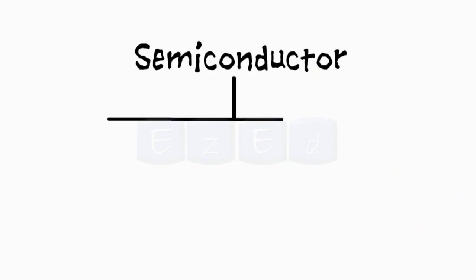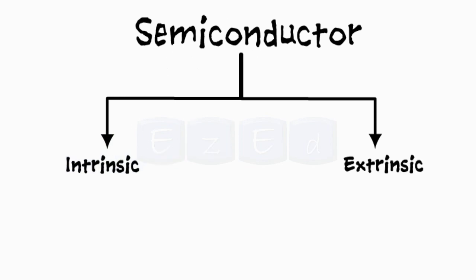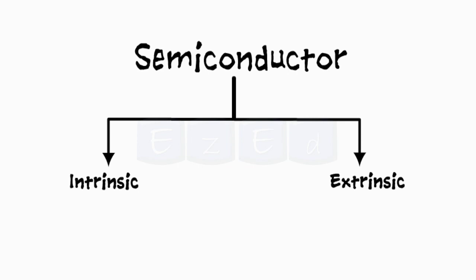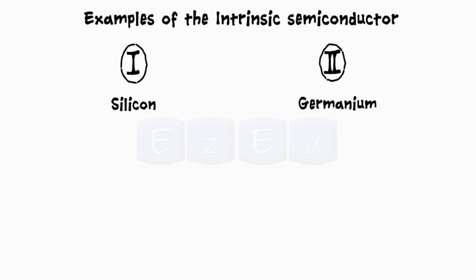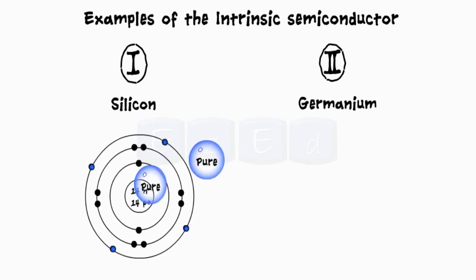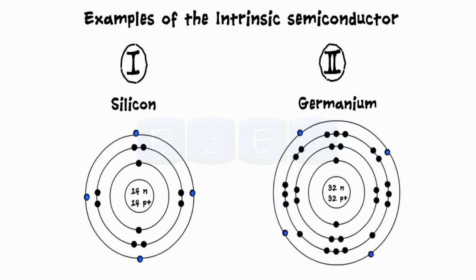Semiconductors are further divided into intrinsic and extrinsic semiconductors, depending on their structure, properties, etc. Intrinsic semiconductors — intrinsic means in its purest form. Therefore, these types of semiconductors are in their purest form by the nature of their existence. The common semiconductors used are silicon and germanium, and they have four valence electrons orbiting in the outermost shell.